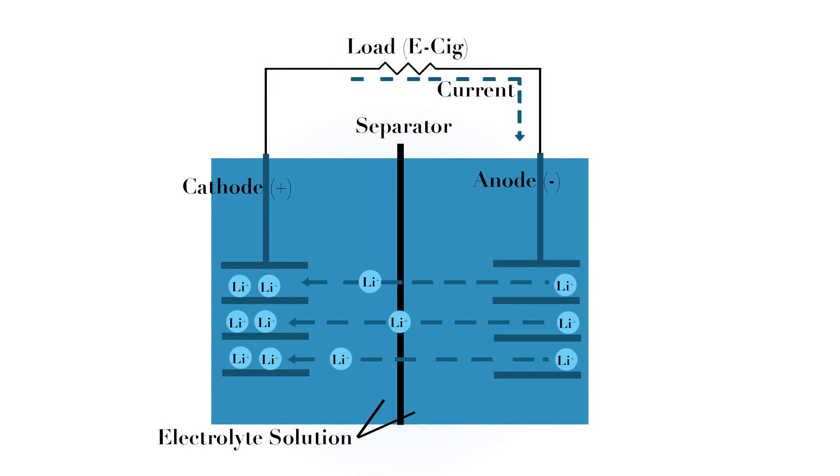First we'll do a basic overview of how these batteries work to create electricity. Almost any battery you see out there will work on the same basic principle. Encased inside your battery there is a positive cathode, a negative anode, and an electrolyte solution to help catalyze the electrochemical reaction that creates electricity. It is the movement of positive ions — in our case lithium ions — that move from anode to cathode to generate the electricity.